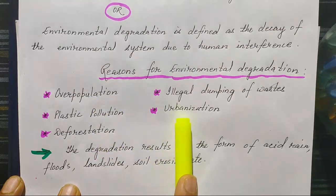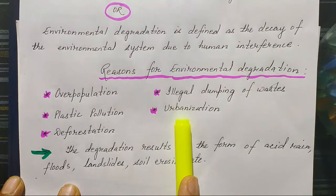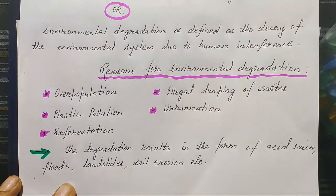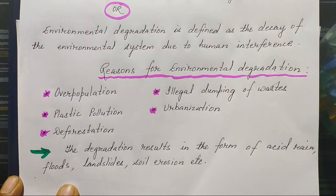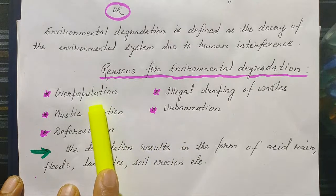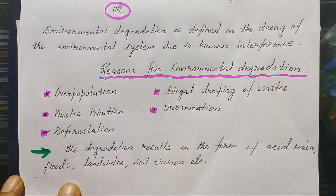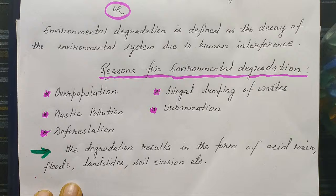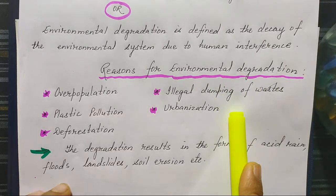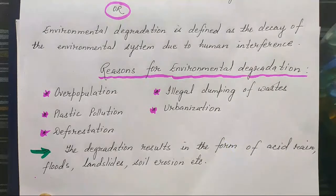Overpopulation is related to urbanization. In rural villages we have greeneries, but when we come to cities and towns, we can barely see greenery because people are building big flats and buildings, destroying natural vegetation. So overpopulation, urbanization, plastic pollution, and usage of plastic contribute maximally to air, water, and land pollution. Deforestation, cutting of trees, and illegal dumping of substances are also reasons for environmental degradation.